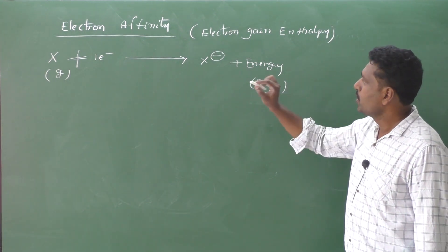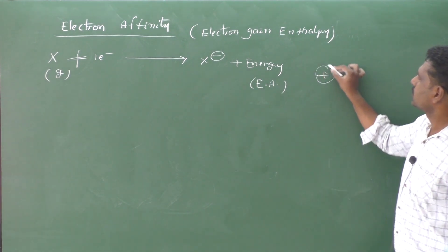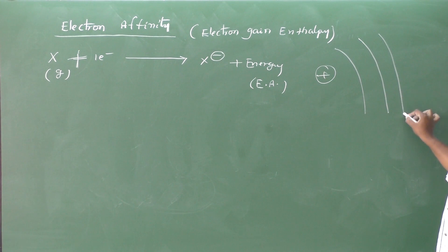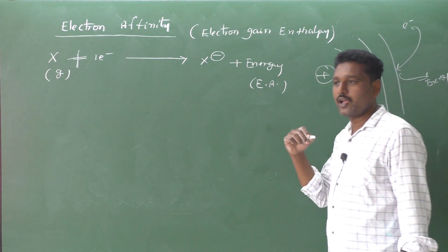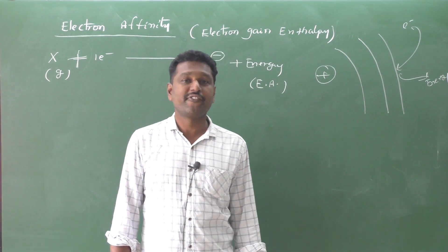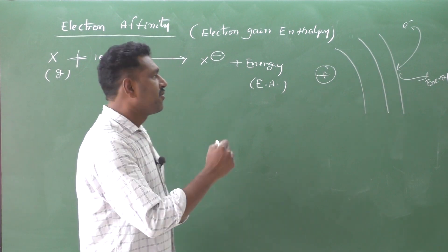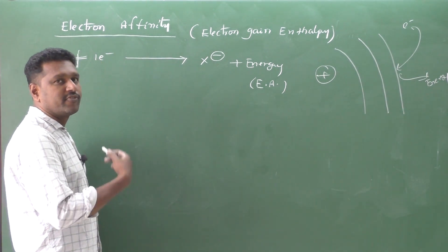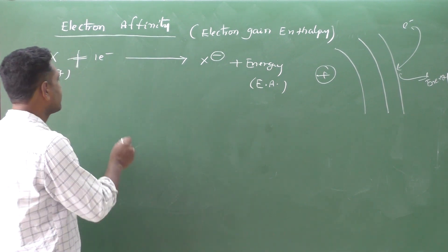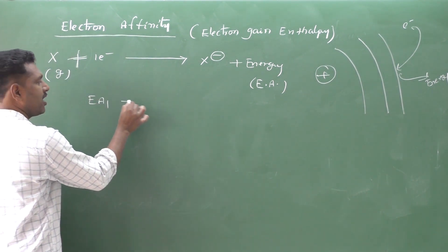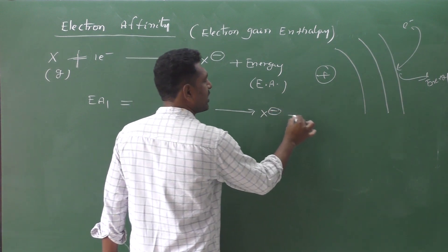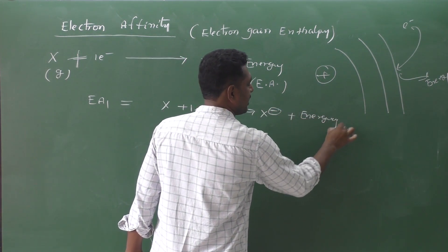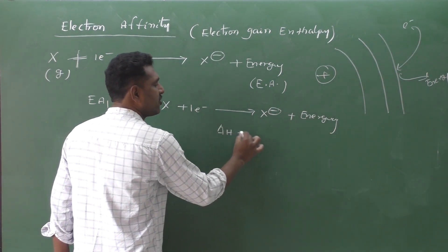When we add one electron to an atom, some amount of energy is released — that release of energy is called electron affinity energy. For the first electron affinity, EA1: X plus one electron is converted into X minus with the release of energy. Delta H is negative.